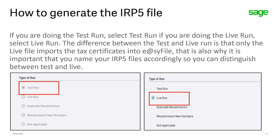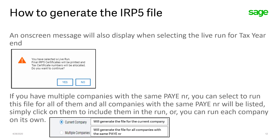It is important that you name your IRP-5 files accordingly so that you can distinguish between test and live runs. An on-screen message will also display when you select to do the live run for the tax year end process. If you have multiple companies with the same pay-as-you-earn number, you can select to run this file for all of them — all companies with the same PAYE number will be listed, and you simply click on them to include them in the run. Or you can do a run for each company and individually import them into EASY file, and the values will all be totaled together.